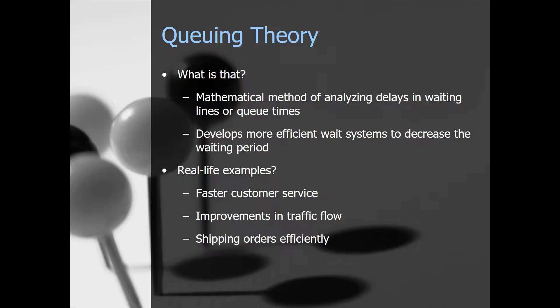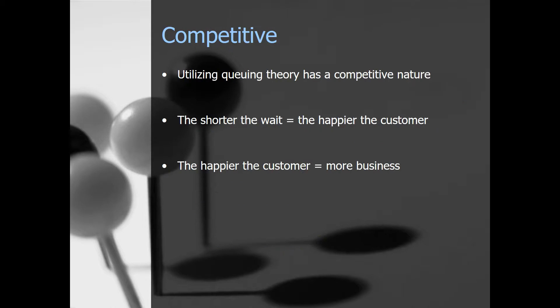What are some real life examples? Applications of the Queuing Theory include providing faster customer service, improving traffic flow, shipping orders efficiently from a warehouse, and things like call centers. Nobody likes being on hold. Businesses are constantly competing to have better queue times because the shorter the wait, the happier the customer is, and happy customers will come back to your business.